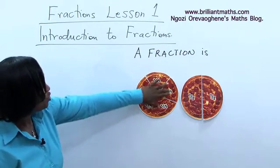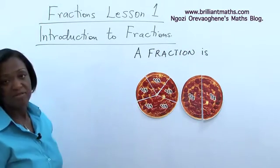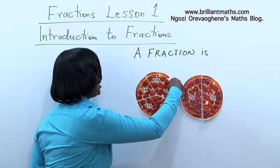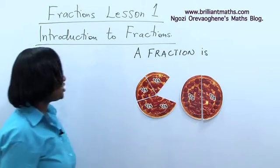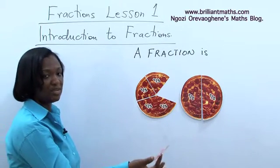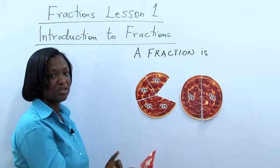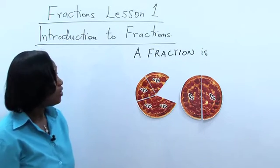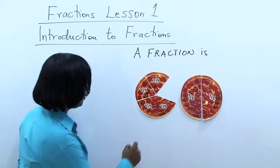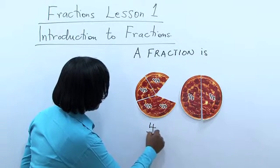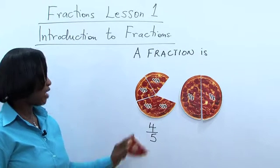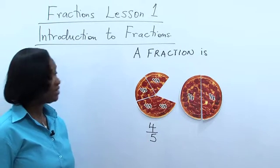One, two, three, four, five. If you take out one piece, what is left is a fraction and what you have taken out is also a fraction. It means that for this pizza, four out of five is left and one out of five has been taken.